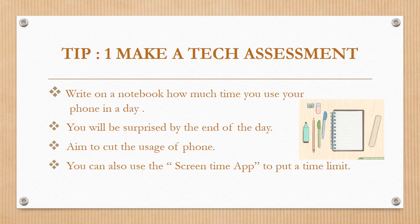Tip number one is to make a tech assessment. Tech assessment is a very simple procedure. You have to take a notebook and spend a day tracking your phone use. You have to write in the notebook how many times you use the phone. For example, if you use the phone for 15-20 minutes in the morning, write it down.